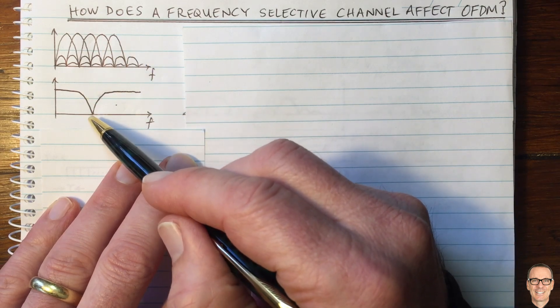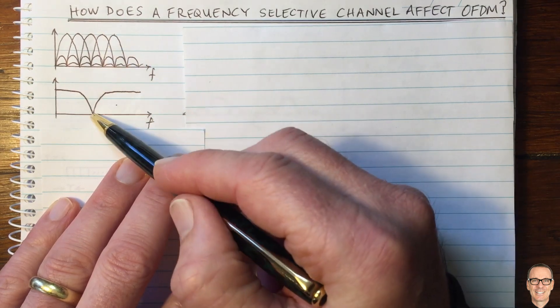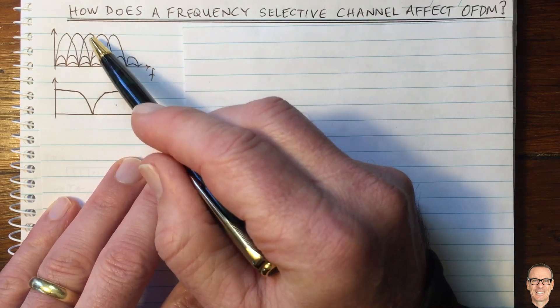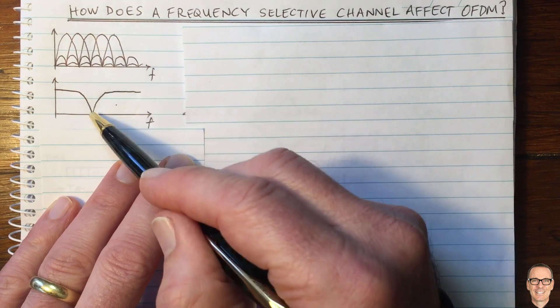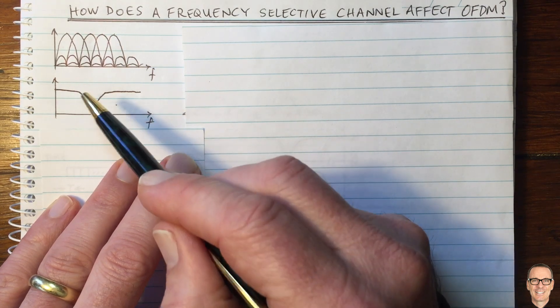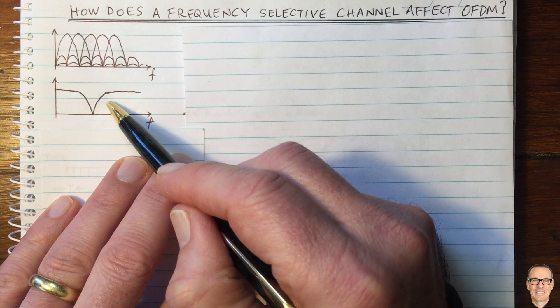In this case, it's very common to put these two pictures together and to think that in this case, that sub-carrier 3 would be completely notched out. But is that really what's going to happen?